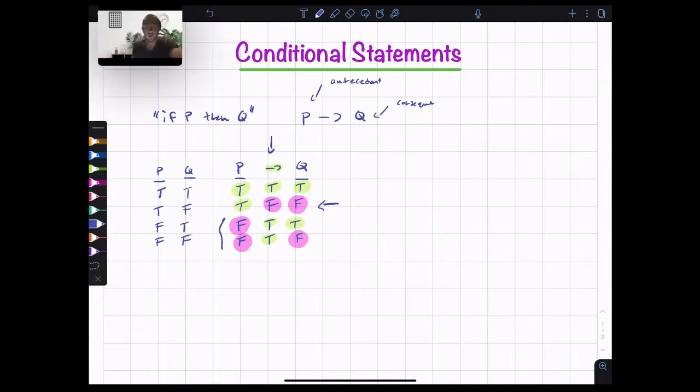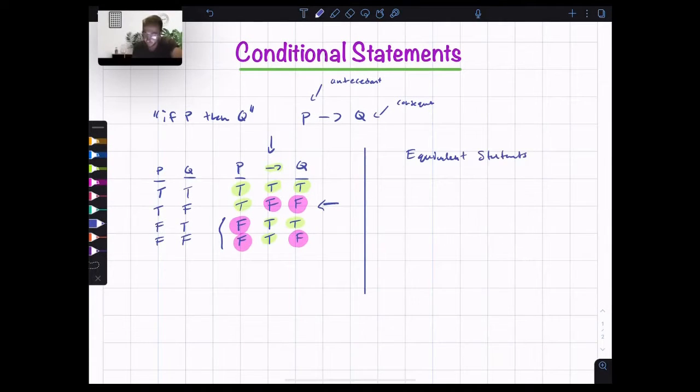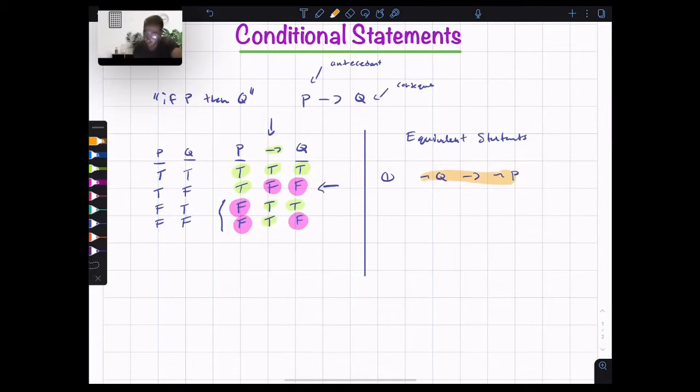With that in mind, let's move on to the equivalent statements. So the first one is not Q, then not P. This is the first equivalent statement and this is called the contrapositive.